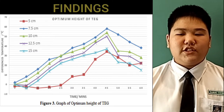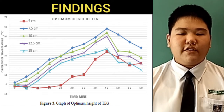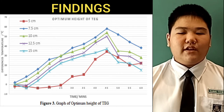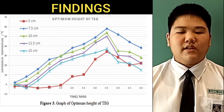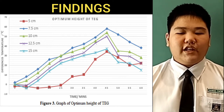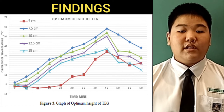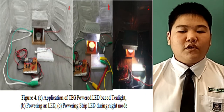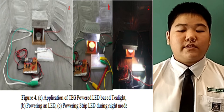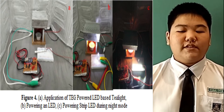Findings. Figure 3 shows the optimum height of the TEG at 7.5 cm with a delta T of 58 degrees Celsius. The energy-harvested output is about 1.81 Watts, which is insufficient voltage for the LED to be switched on. In Figure 4, we use a DC to DC booster to supply 5 Watts for powering the LED for 2 hours.